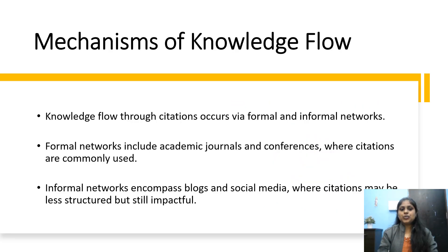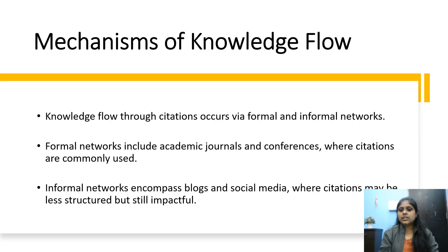Mechanisms of Knowledge Flow. Knowledge flow through citations occurs in formal and informal networks. Formal networks include academic journals and conferences where citations are commonly used — these can be found through IEEE Xplore or other websites. Informal networks encompass blogs and social media, where citations may be less structured but still impactful.